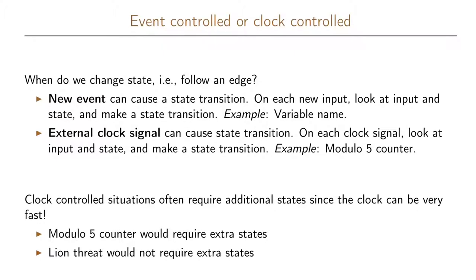We can follow an edge when we have a new event that will cause a state transition. For example, when we have a new input, we look at the input and the state, and then make the state transition. This was the case in the example with a variable name.